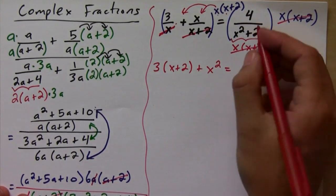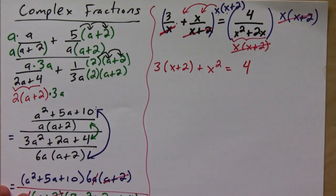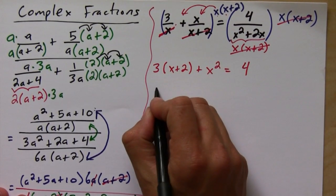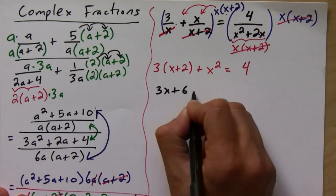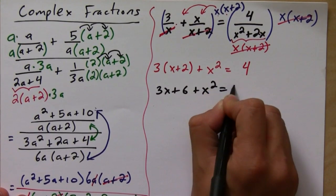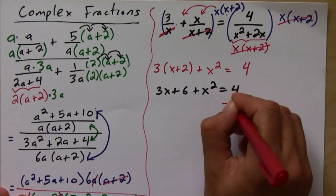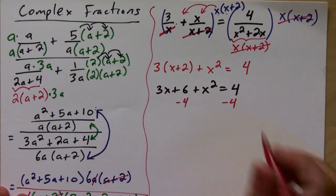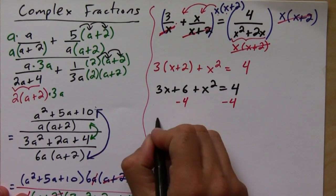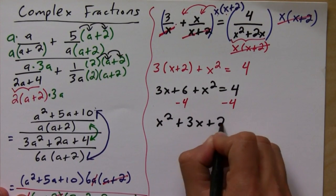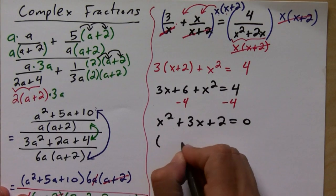Okay, so this is going to equal 4. And so then we just simplify and solve, so we get 3x plus 6 plus x squared equals 4. This is a quadratic equation so we need to set it equal to zero. And let's put it in order, so we're going to get x squared plus 3x plus 2 equals 0. And then we factor.